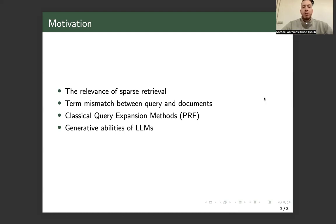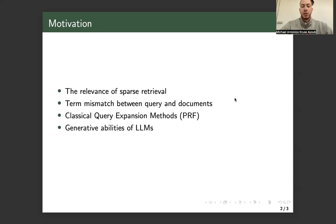One inherent problem in sparse retrieval methods is that if there exists a big term mismatch between queries and documents, then the retrieval results can be poor. Classical query expansion methods such as relevance feedback have tried to solve this query-document mismatch by obtaining an initial ranking of documents, where an estimate of the most relevant terms are then used for query expansion. Such methods come with severe limitations because of their huge dependency on the initial ranking of the relevance feedback process.